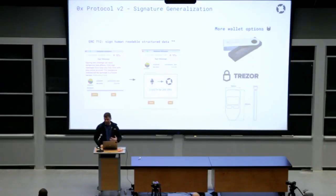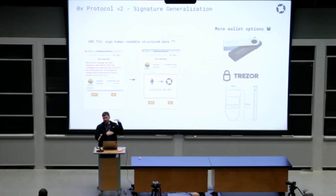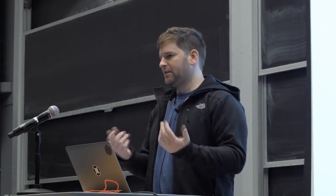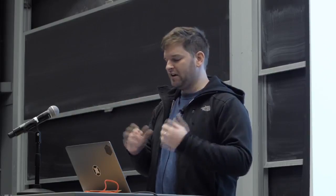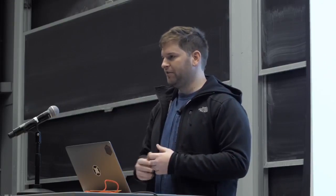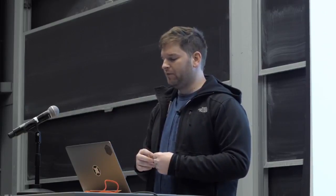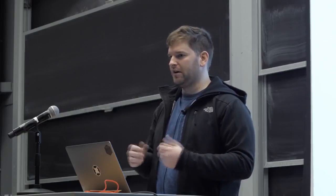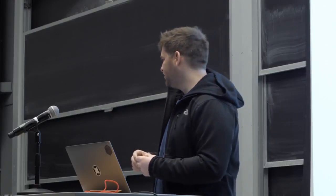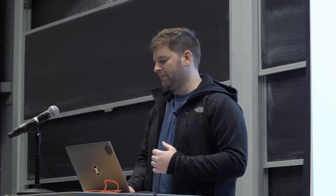0x protocol version two is also going to include signature generalization, which means you will be able to sign human-readable structured data. The 0x message format includes parameters associated with the trade you'd like to enter into — you hash all those parameters and sign that hash to create a cryptographic signature. Today, you see a big scary message with a 0x order hash. In the future, using signature generalization and a new proposal we've put forth, you will be able to visually inspect exactly what you are signing. Another nice benefit is there will be more wallet options — today you can trade from your Ledger hardware wallet, and in the future you'll be able to trade from your Trezor and other wallets as well.